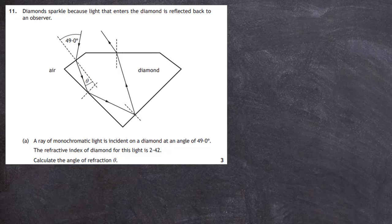For three marks, we are told to calculate the angle of refraction theta shown on the diagram. A ray of monochromatic light is incident on a diamond at an angle of 49.0 degrees — that is the angle of incidence. The refractive index of the diamond for this light is 2.42.